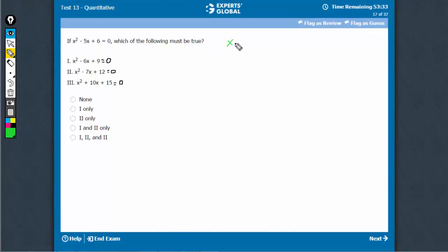This means that x can be equal to 2 or x is equal to 3. Statement 1 means x minus 3 whole square indirectly. X minus 3 whole square is equal to 0 when x is equal to 3.